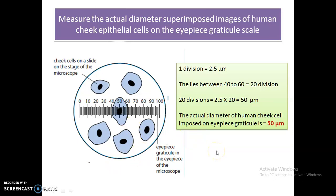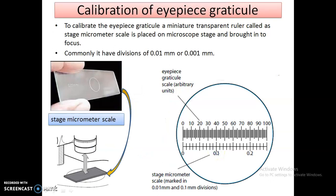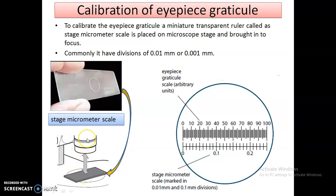Now, how do we calibrate the eyepiece graticule? Calibration is done with the help of a stage micrometer scale. This stage micrometer is a miniature transparent ruler which is placed on the stage of the microscope. At whatever magnification we want to observe, we adjust this stage micrometer at the same magnification and view it through the eyepiece lens.